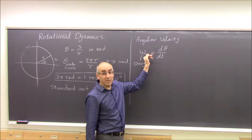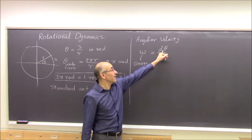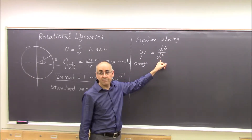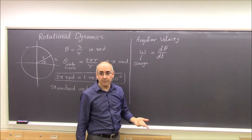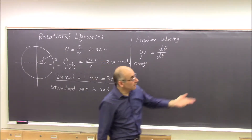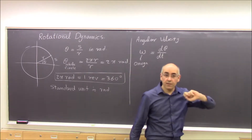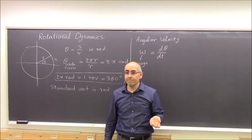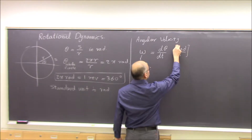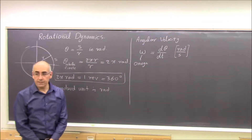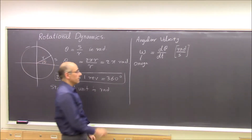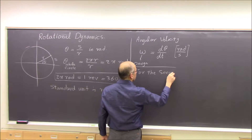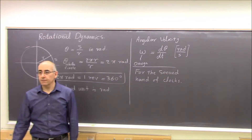If omega is constant, you can write it as Δθ/Δt. For anything that's rotating you can calculate omega. For example, for the second hand of a clock, how much is omega? The unit of omega is radians per second.